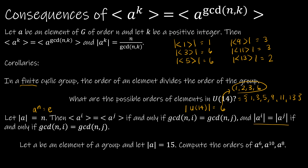Let A be an element of a group and let the order of A be 15, so N is 15. Compute the orders of A to the 6th, A to the 10th, and A to the 8th. For A to the 6th, we look at the GCD of 15 and 6, which is 3. 3 is the largest value that goes into both 15 and 6. So the order of A to the 6th is equal to 15 divided by 3, which is 5.